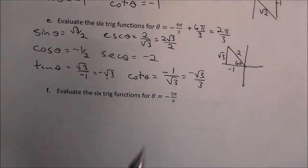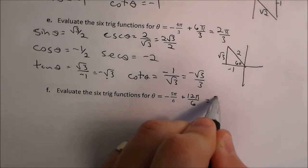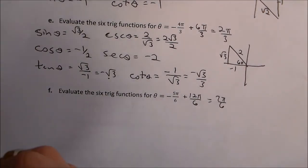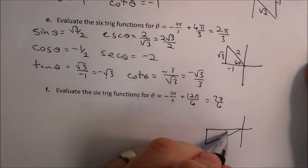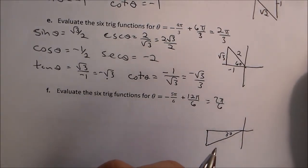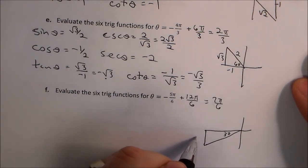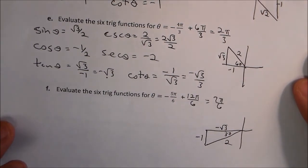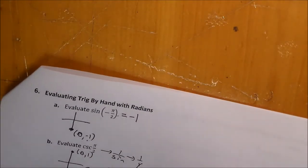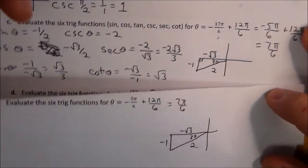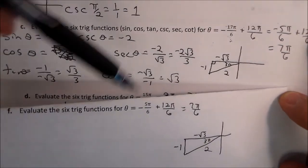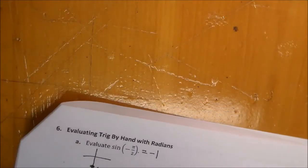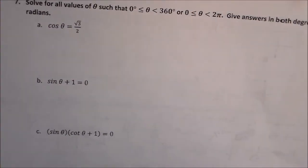For negative 5π over 6, add 12π over 6 to get 7π over 6, which is in quadrant three with a 30 degree reference angle. The sides are negative 1, negative root 3, and 2. This is actually the same coterminal angle as negative 17π over 6, so all six trig function values are identical to what we found in that problem. Using coterminal angles helps us simplify and find the values we want.